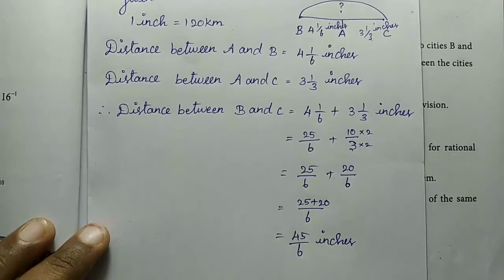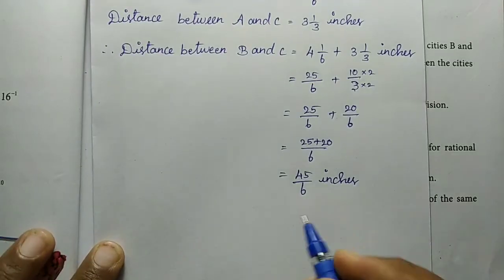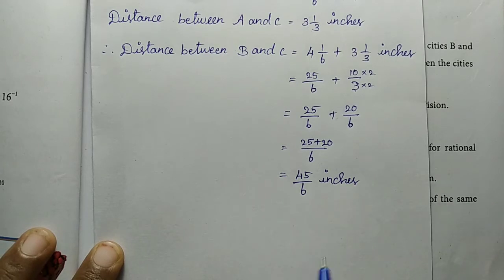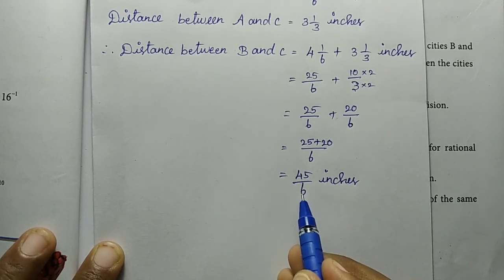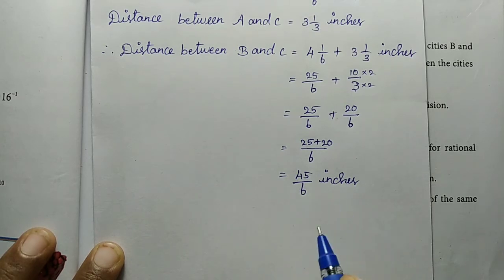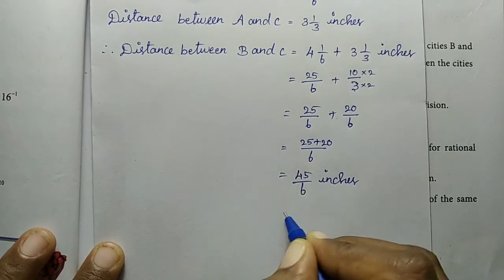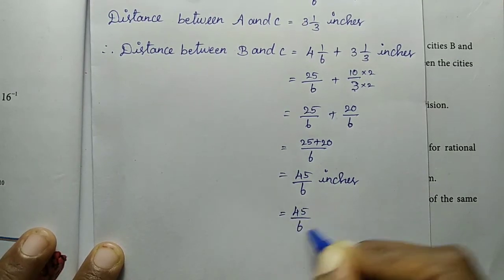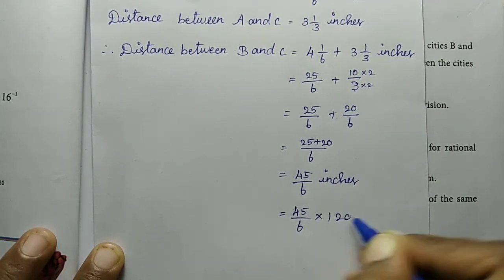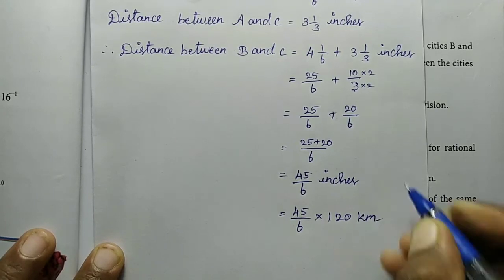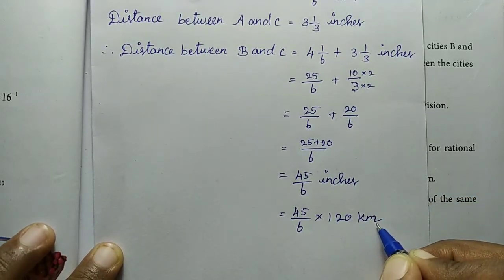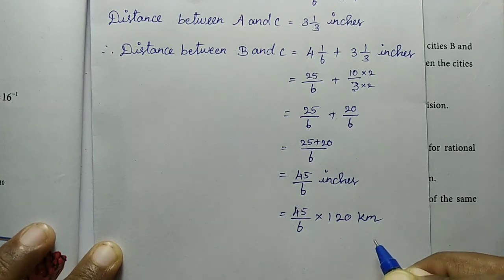We will convert the value of 45 divided by 6 into 120 kilometers. The map value is in inches, and the actual distance is in kilometers. So we will find the actual distance.